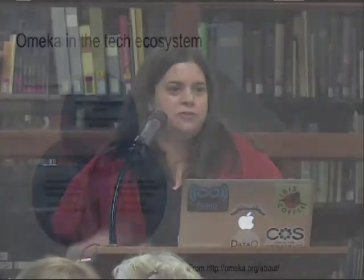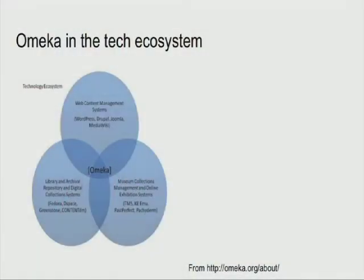Librarians love Venn diagrams, so I wanted to highlight how Omeka positions itself in the tech ecosystem. It's at the intersection of web content management systems like WordPress, museum collection management systems, library digital collections, and repository systems. Omeka is like a tiny piece of all of those things, but it doesn't do everything that all of these systems do. So what is it not for? It's not really a full-fledged content or digital asset management system. I don't really know of any library that only uses Omeka for their digital collections.